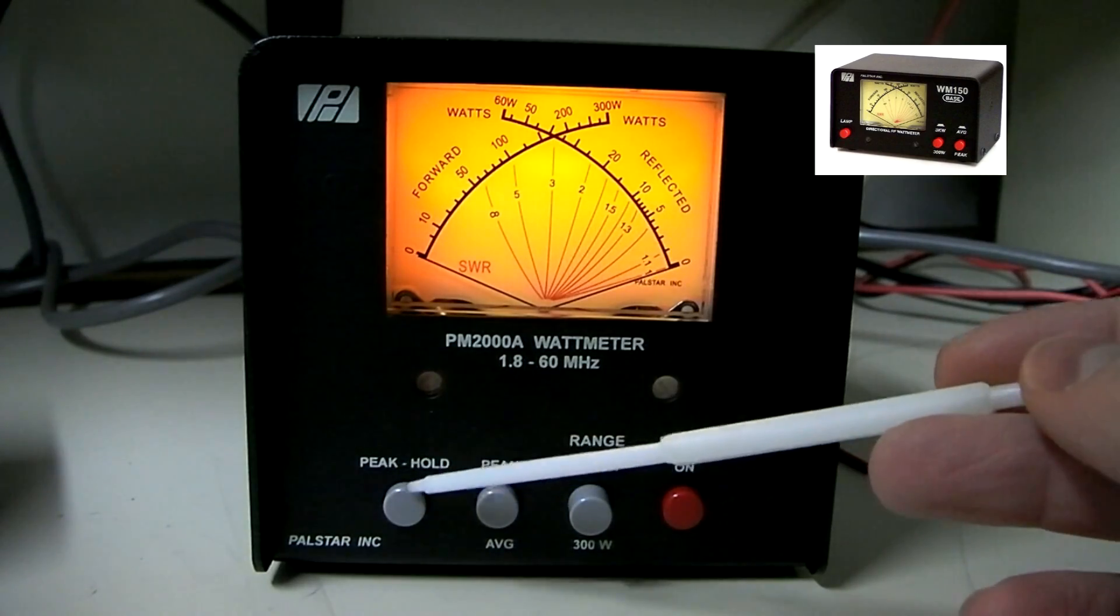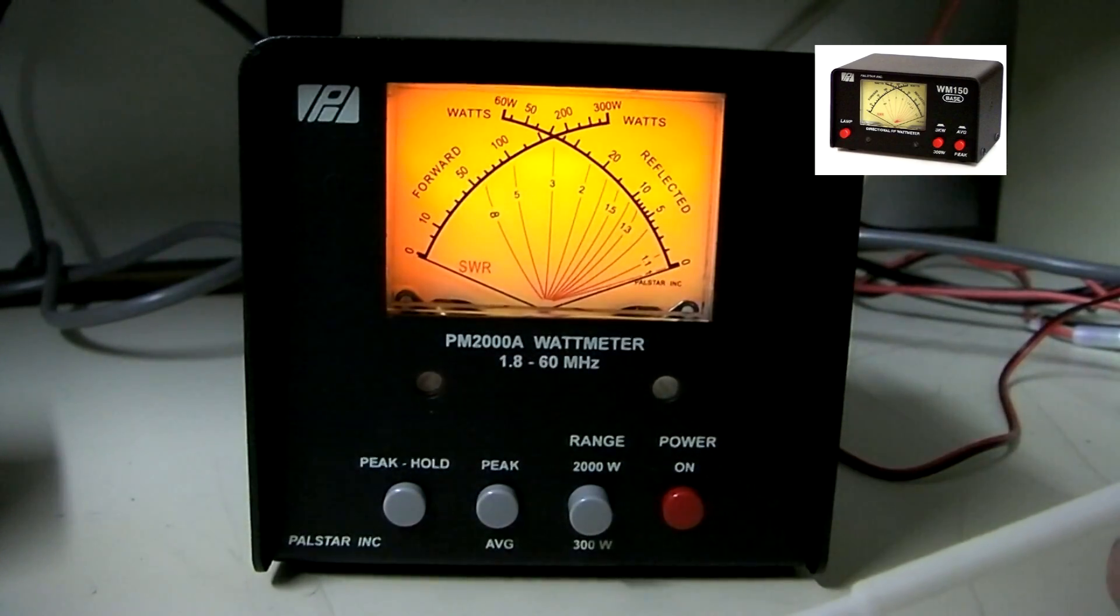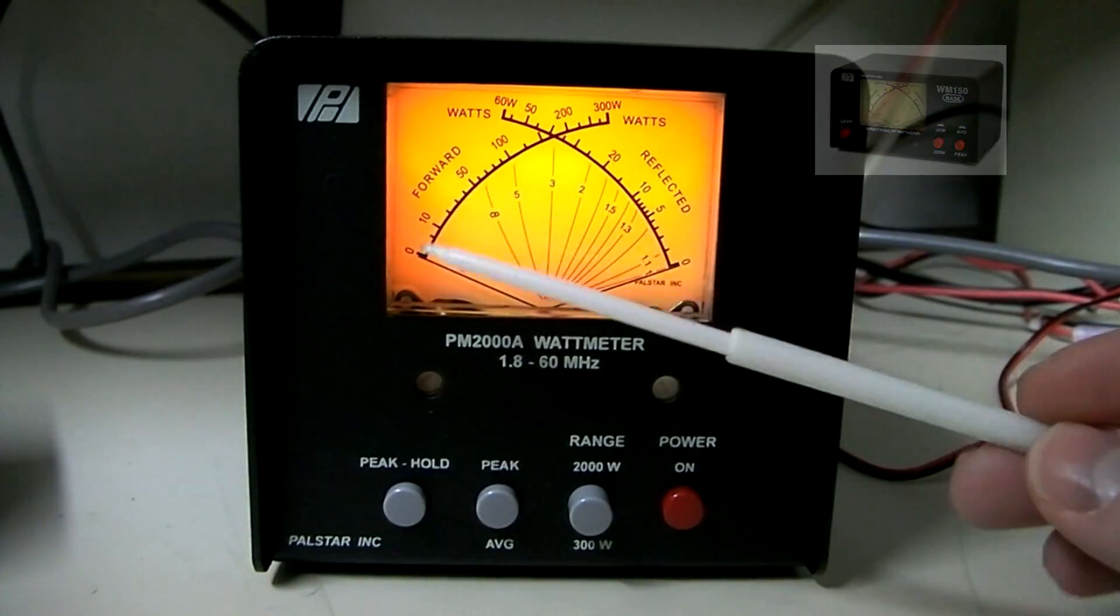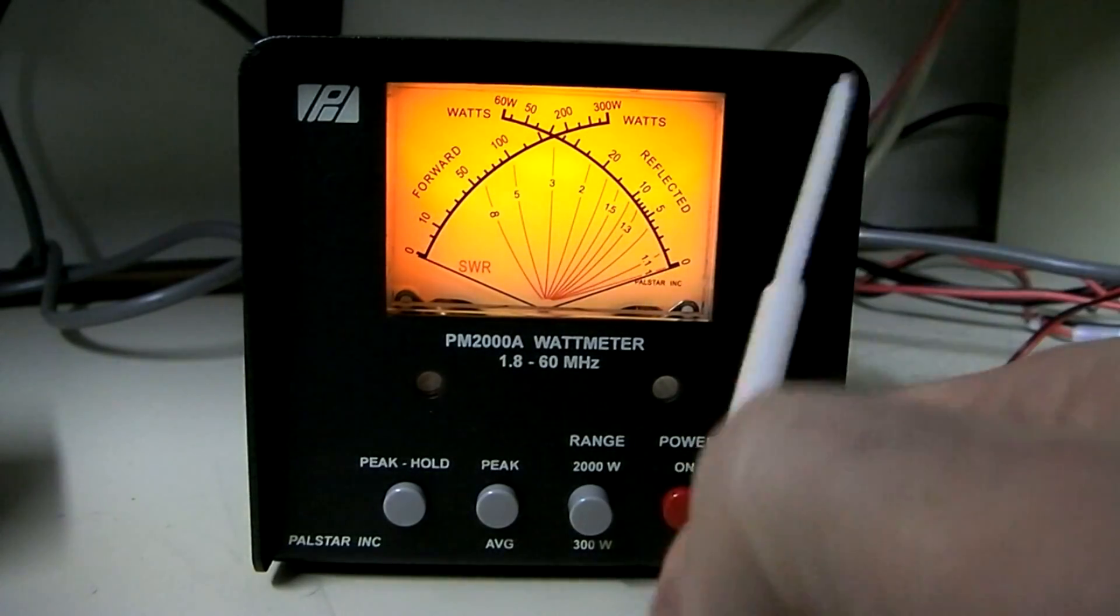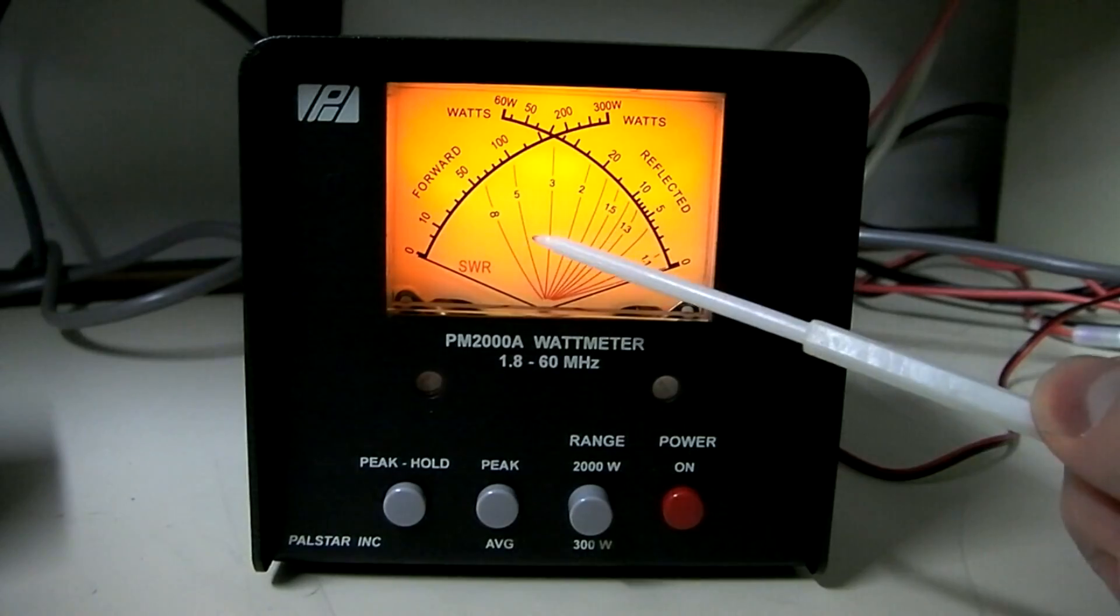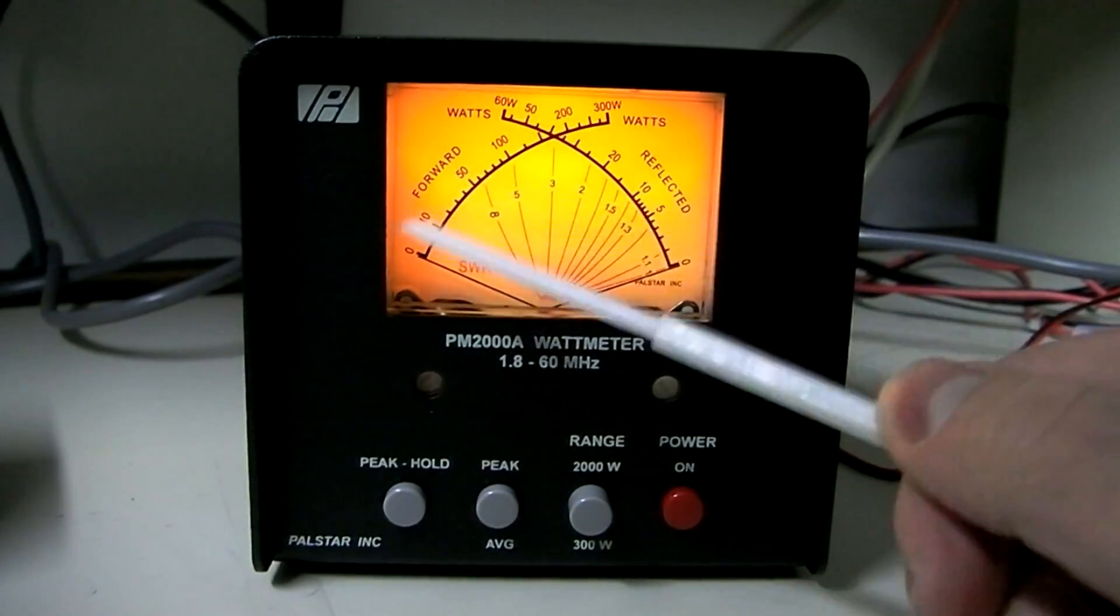You'll see here that it has a peak hold so that it'll show your peak for a couple of seconds. This meter shows your forward and reflected power on the two scales. It also will show your SWR where the two cross. It has an analog display here.